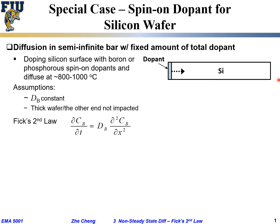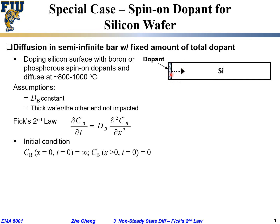Fick's second law applies here because we have assumed D to be constant. To solve this analytically, we use boundary conditions and initial conditions. The initial condition is: concentration equals effectively infinity at x = 0 when time is zero — the spin-on dopant at the surface is at very high concentration. Going into the silicon at t = 0, the initial concentration is zero throughout, since it's high-purity silicon.